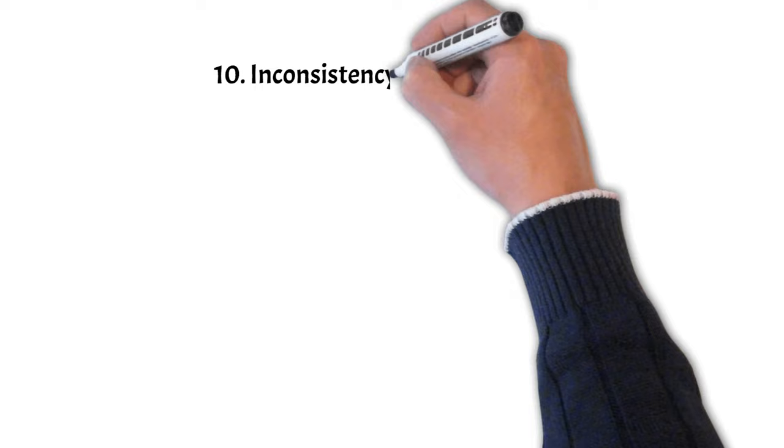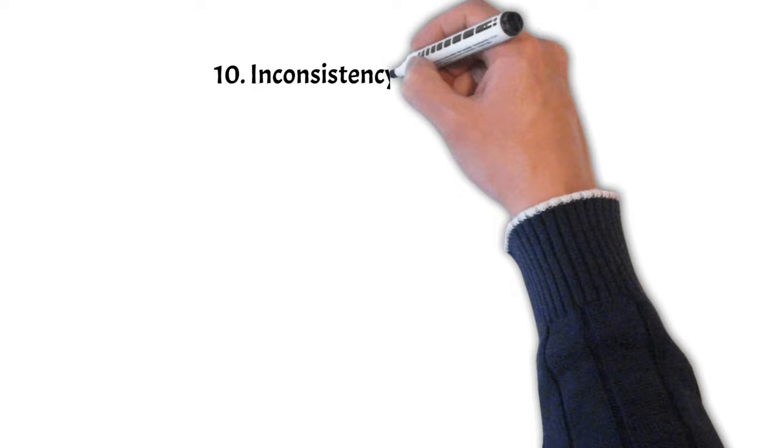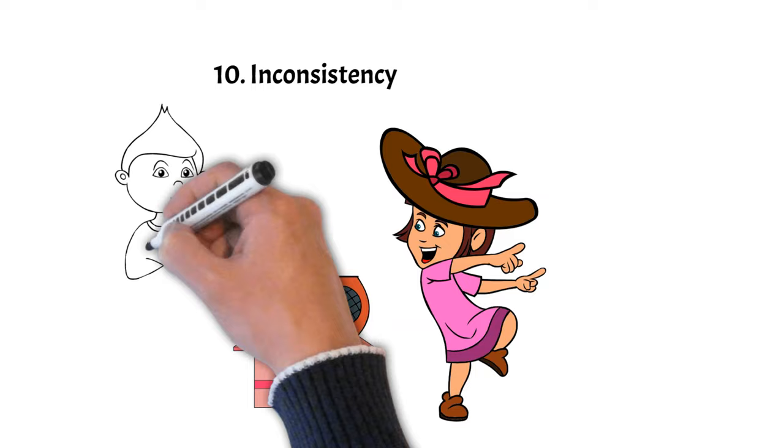And number 10: Inconsistency. Depending on their current stress levels or state of mind, 6s can sometimes behave inconsistently, being warm and engaging one moment and detached or aloof the next.